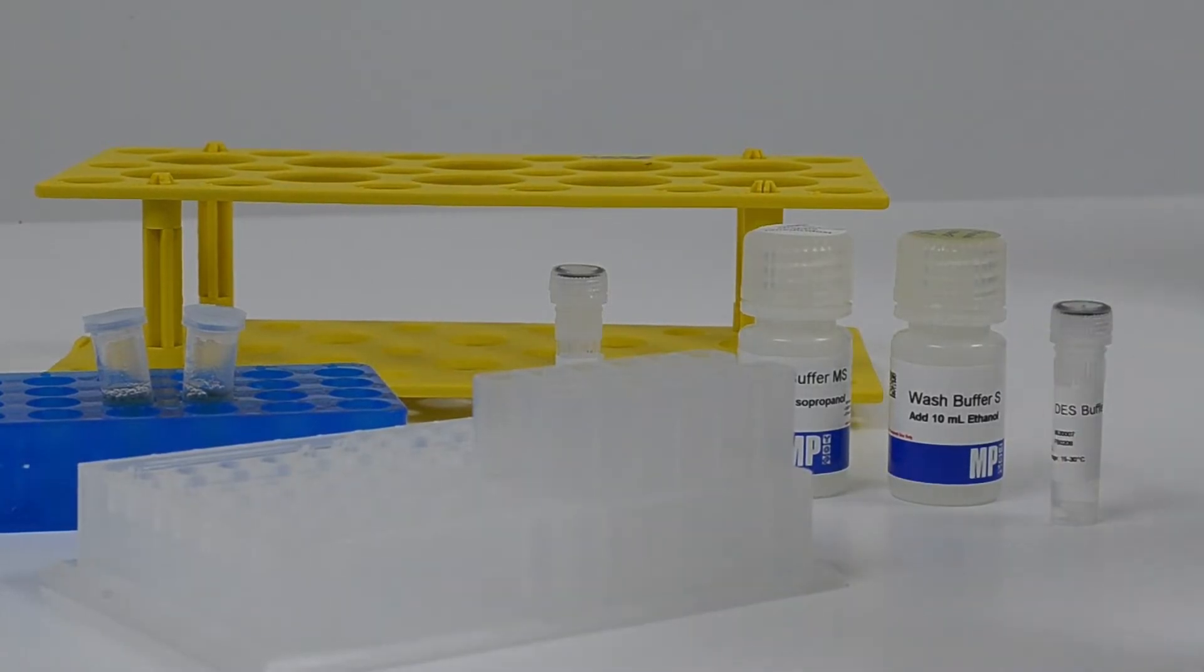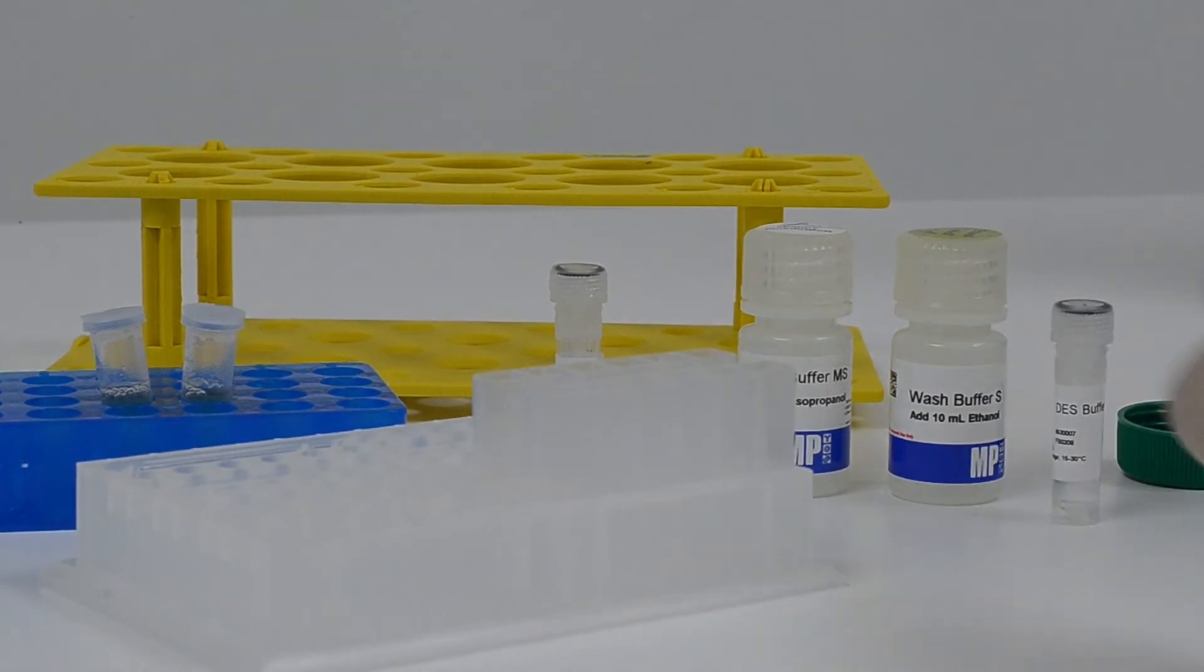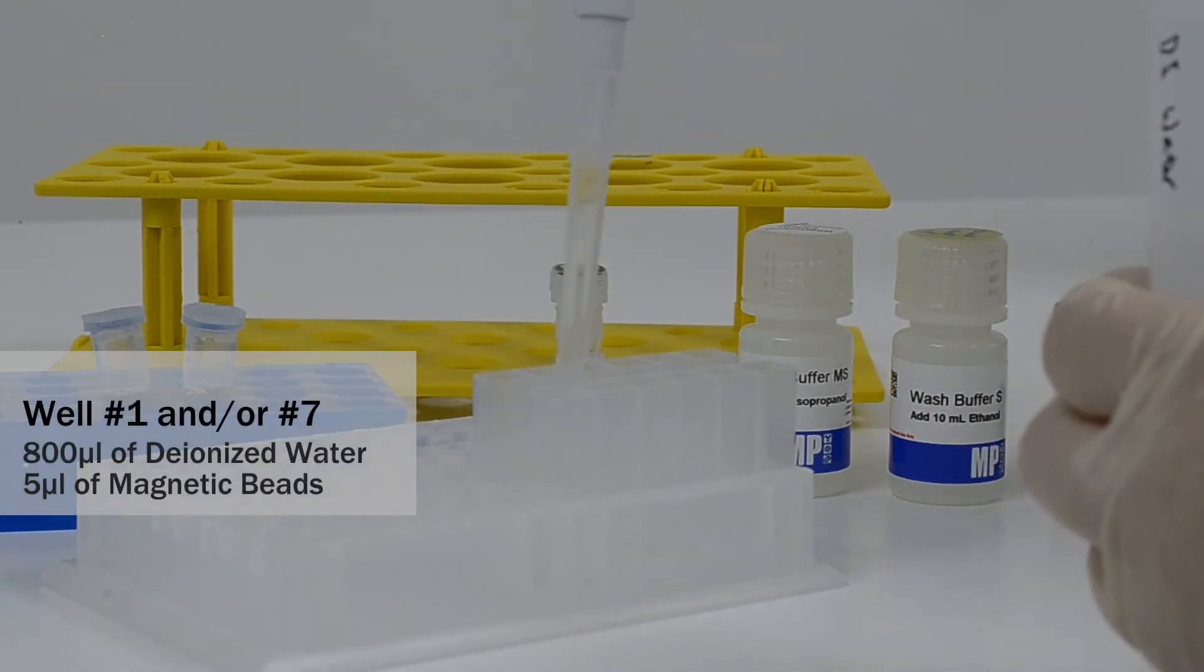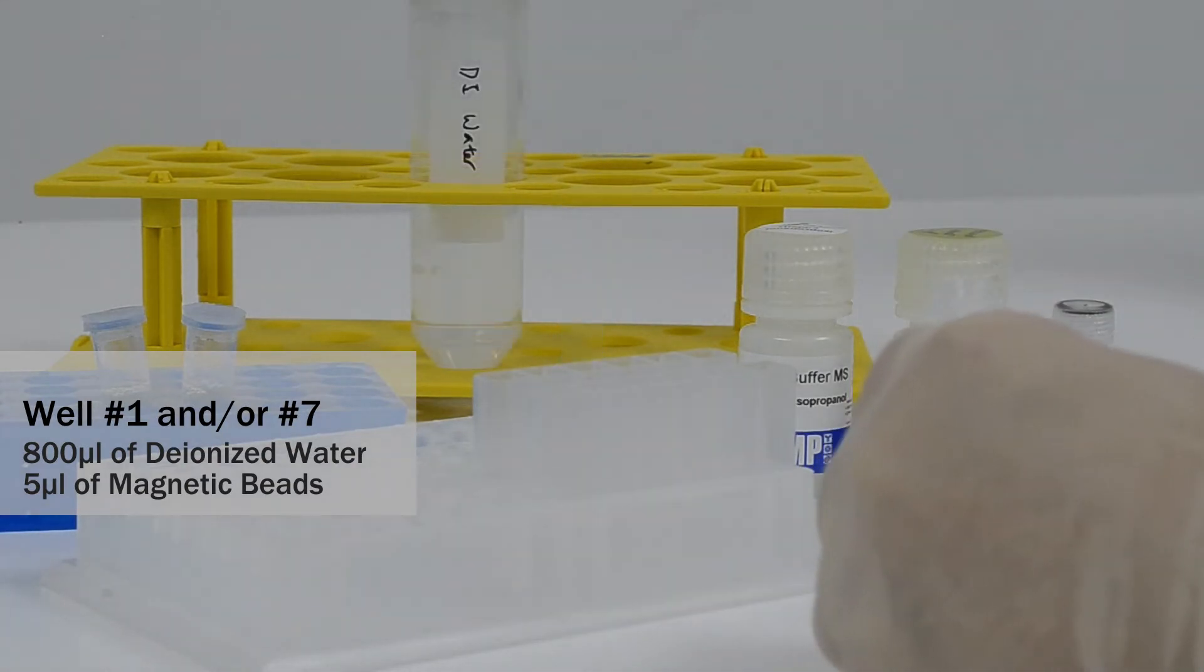Transfer 800 microliters of deionized water and 5 microliters of magnetic beads into the first well. When using 96 deep well plates, you can allocate it in the first and seventh well or column.